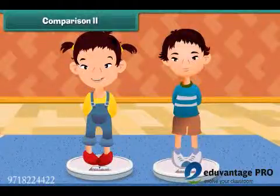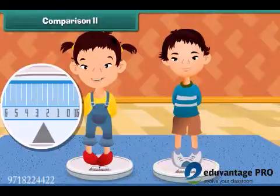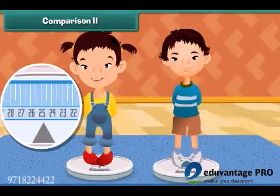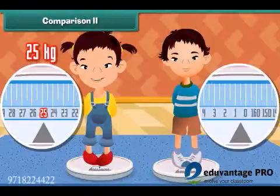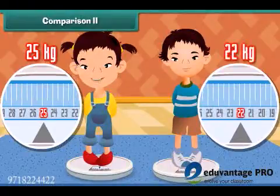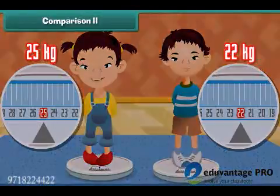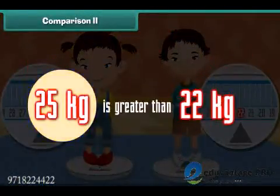Two children measure their weight. The weight of the first child is 25 kilograms and the weight of the second child is 22 kilograms. It is right to say that the weight of the first child is greater than the second one.